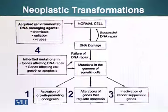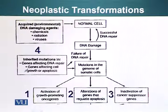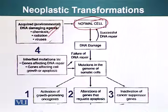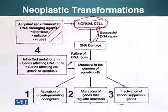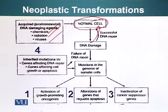Let's look at the neoplastic transformation process. Neoplasia means development of cancer. Here we have a normal cell that, for example, gets damaged due to chemicals, radiations, or viruses. Our cellular machinery, if it does its job properly, should be able to repair DNA so that the damaged DNA becomes normal and the cell will go on living, performing its regular duties. However, if there is a failure of DNA repair, mutations in non-sexual cells of our bodies can accumulate and cause cancer. And if these mutations occur in the cells that result in formation of gametes, these mutations can be passed on to the next generation.